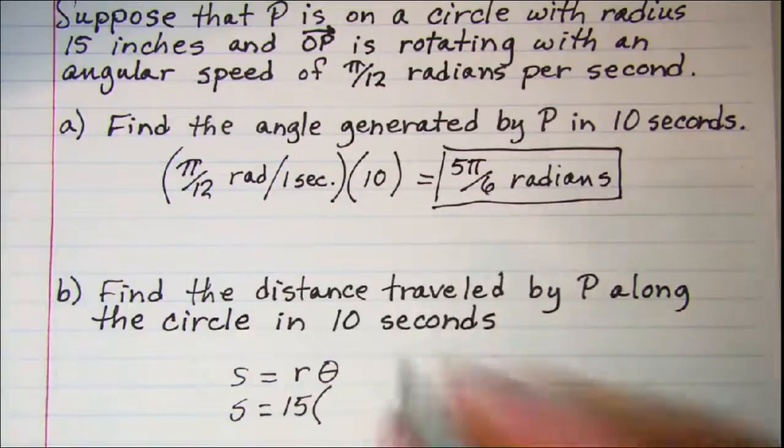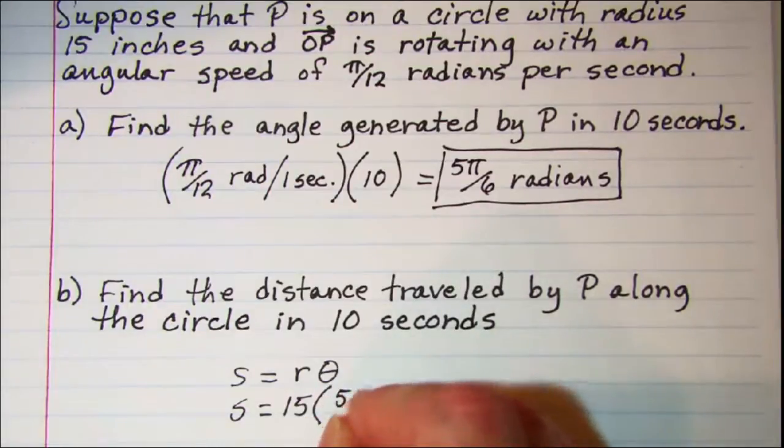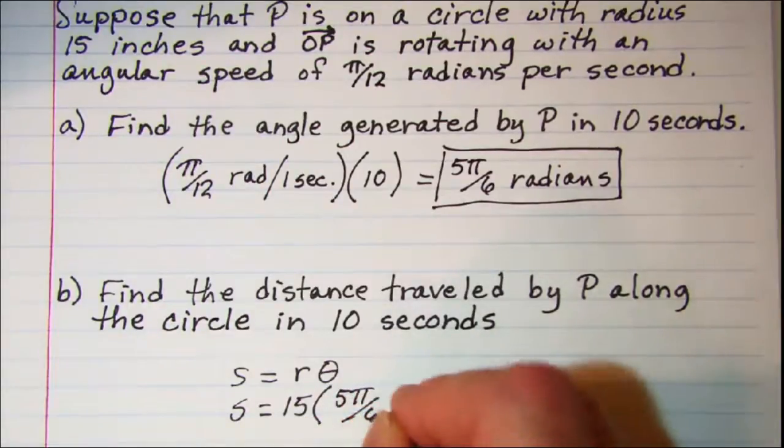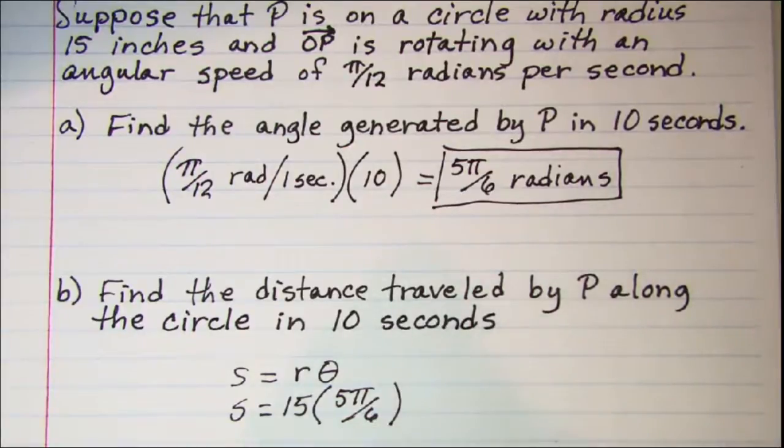And the angle generated in 10 seconds was 5π over 6. So this gives us S is equal to 25π over 2 inches.